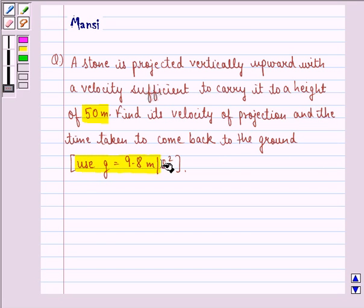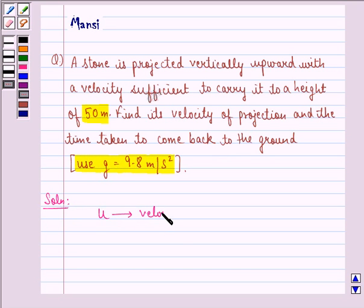Use g equal to 9.8 meter per second square. So let's start with the solution to this question. First of all, let u be the velocity of the stone projected vertically upward.